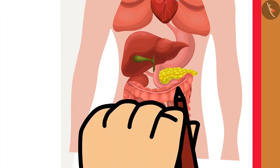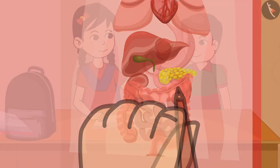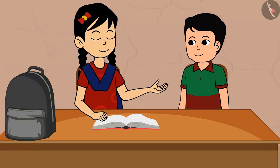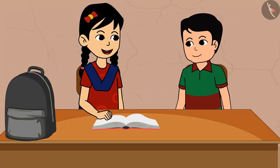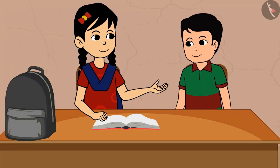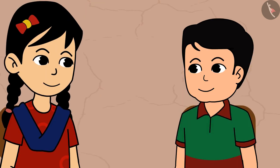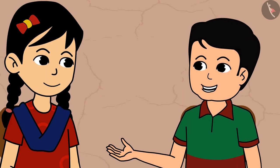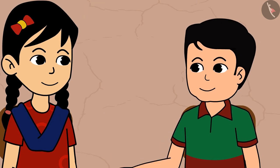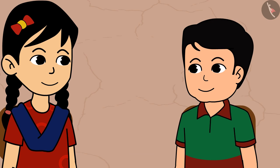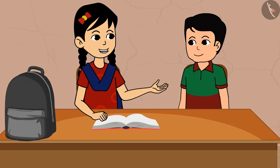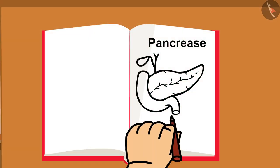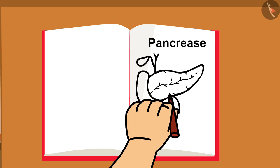The pancreas is a slight yellow color and secretes pancreatic juice, which helps in the digestion of carbohydrates and proteins. Sonu: And where is the pancreas? Didi: The pancreas is situated right below the stomach.